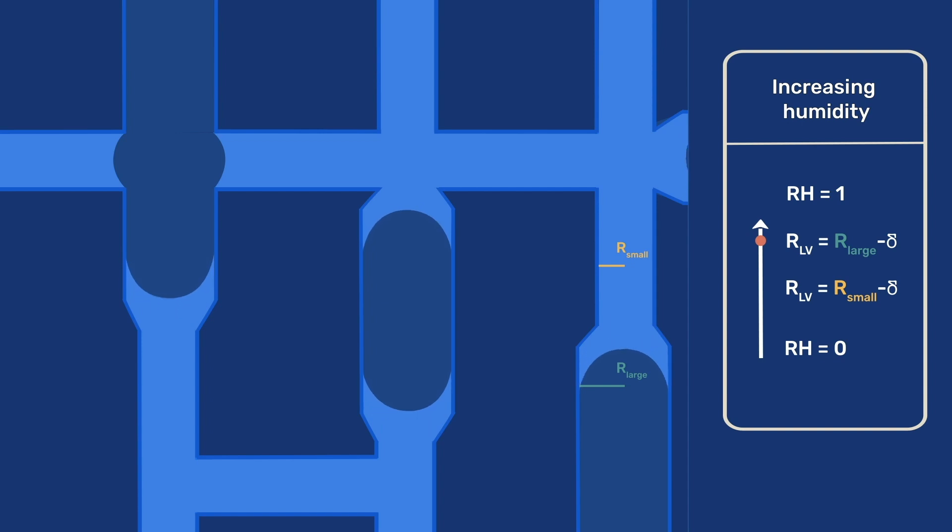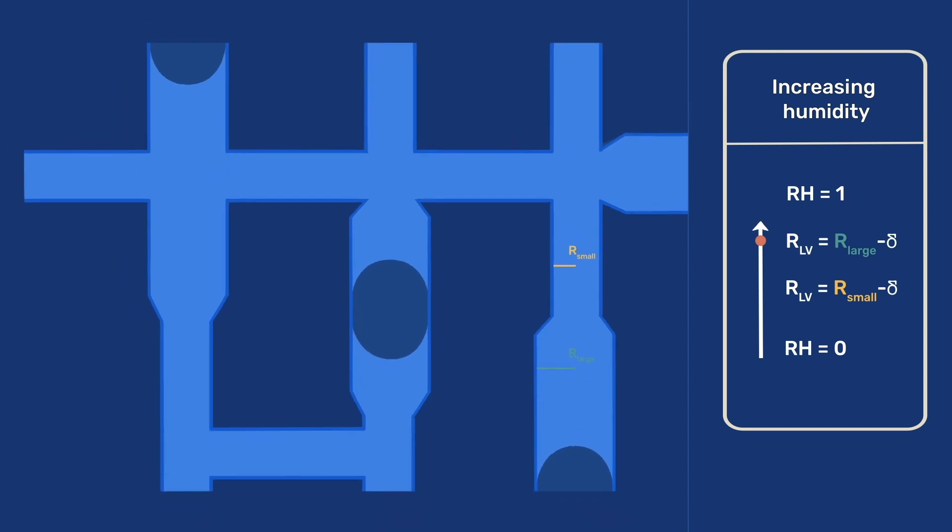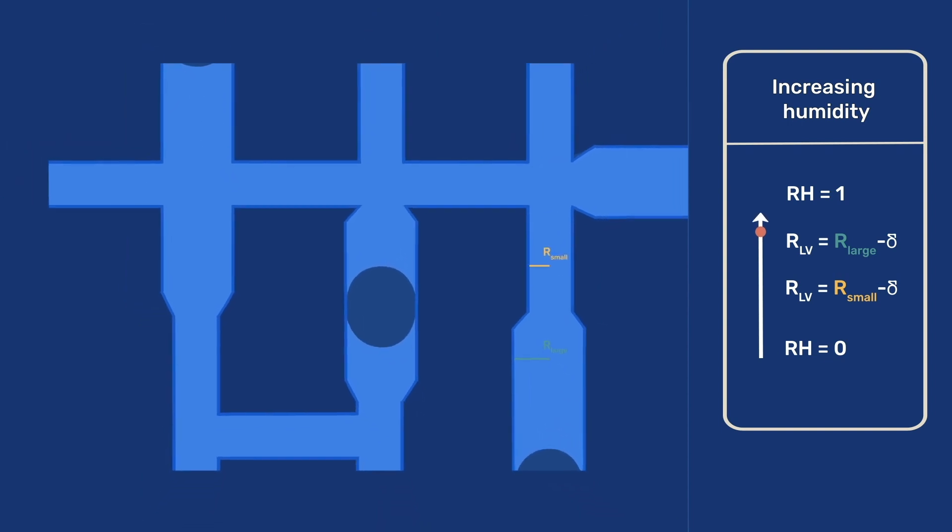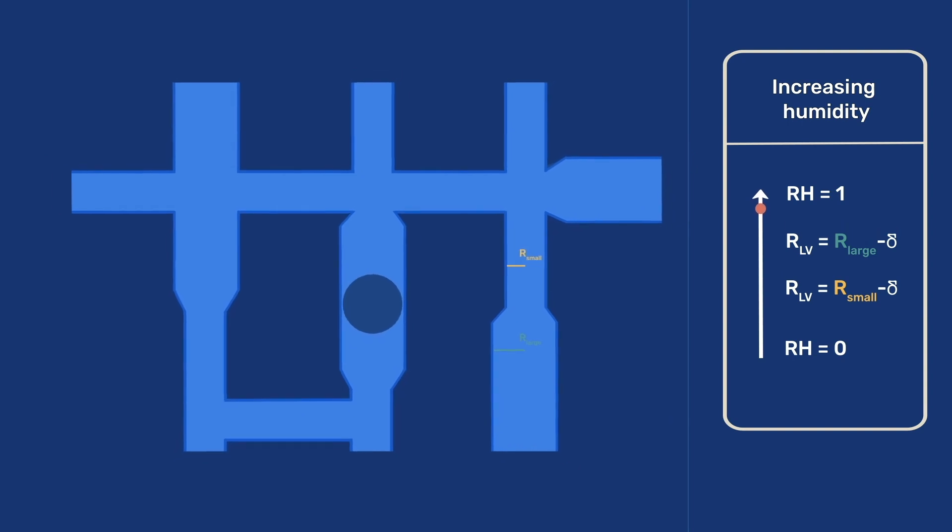After this, additional humidity condenses in the larger pores, causing them to fill progressively. After being filled, RH can increase again, and the menisci of these pores will be flat when RH equals 1.